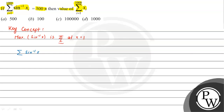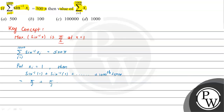We are given that summation of sin inverse xᵢ, where i is from 1 to 1000, is equal to 500π. Since the maximum value of each sin inverse xᵢ is π/2, and there are 1000 terms, the sum can equal 500π only if every term equals π/2. This means x₁ = x₂ = x₃ = ... = xᵢ = 1.